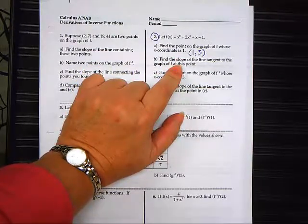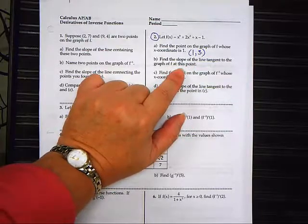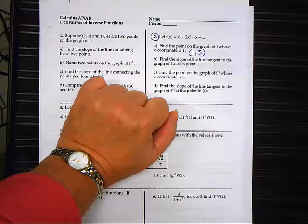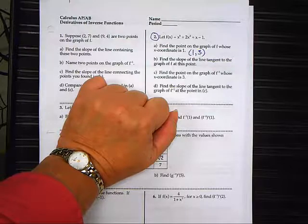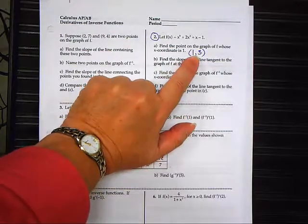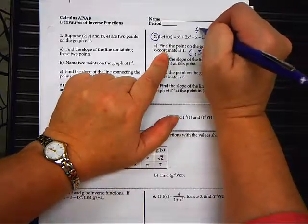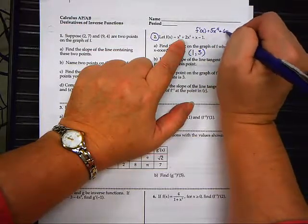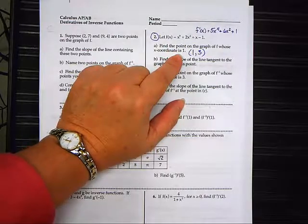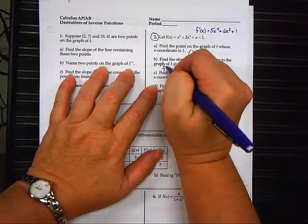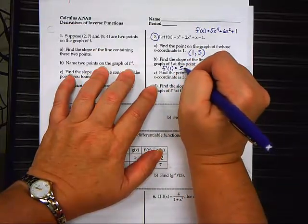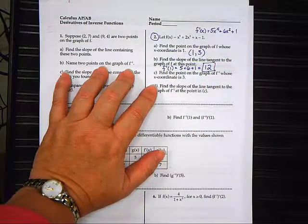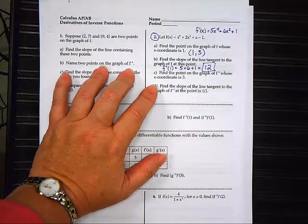Part B, everybody in this class should be able to do. Find the slope of the line tangent to the graph of f at the point you just found. How do you find the slope of a tangent line? Take the derivative. You set it equal to zero? No. Plug in the one. I'm going to write the derivative up here. f'(x) equals 5x^4 + 6x^2 + 1. Then I'm supposed to take f'(1) equals 5 + 6 + 1 equals 12.